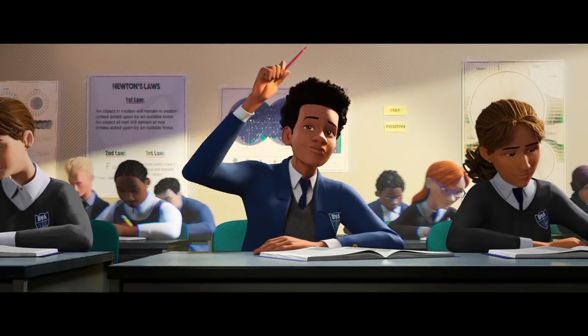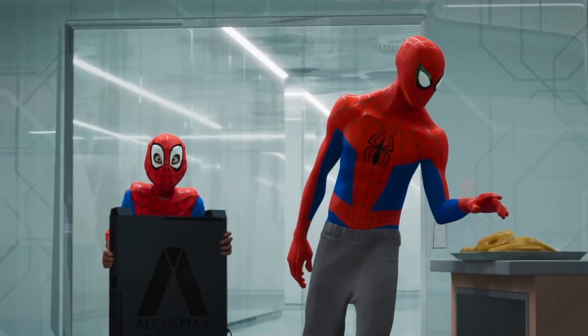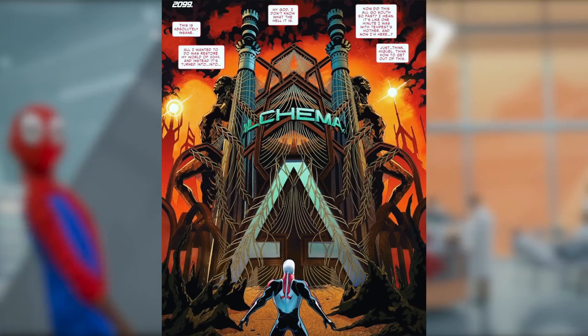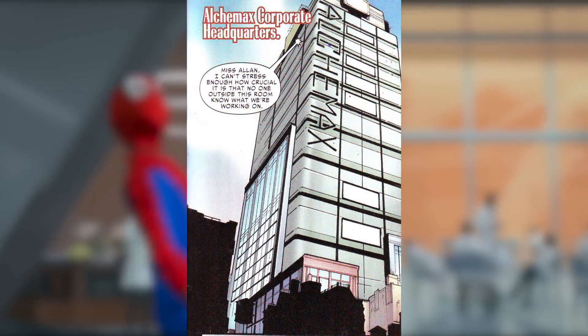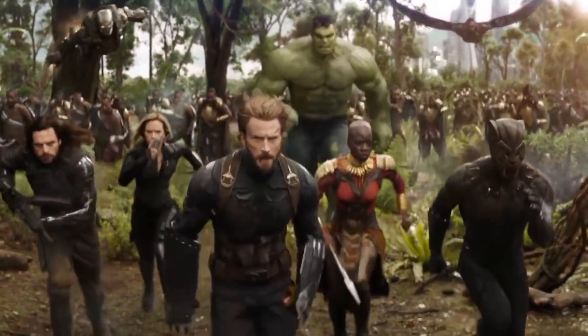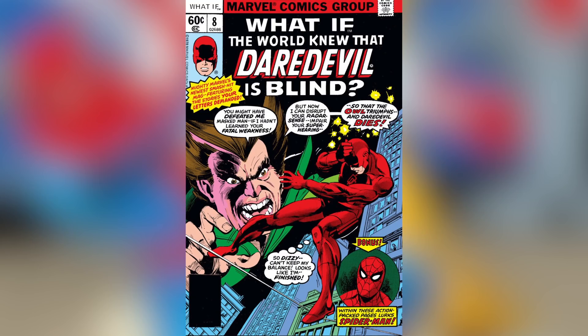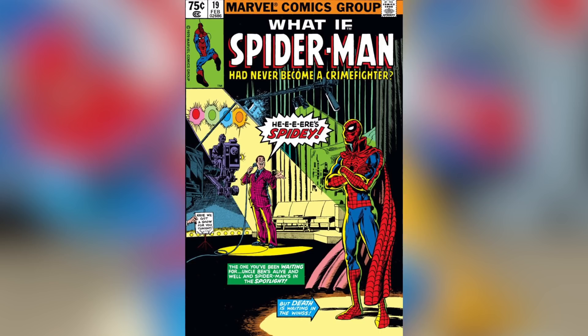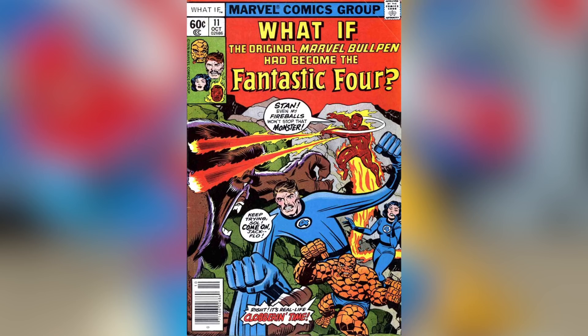Miles is watching a video in class made by the corporation Alchemax, which is owned by Wilson Fisk. Alchemax is in the comics, first appearing in Spider-Man 2099, but later appearing in the current timeline, owned by Spidey's ex, Liz Allen. The narrator in the video calls multiple universes "a what-if to infinity," referencing the Infinity Gauntlet series — loosely adapted into Infinity War — and the anthology series What If?, where every issue focused on a twisted version of the Marvel Universe.